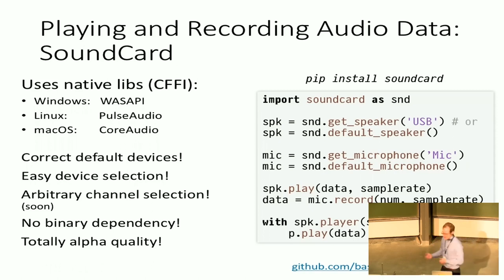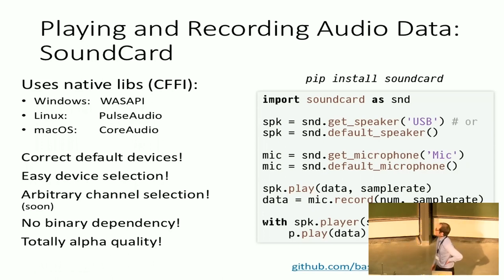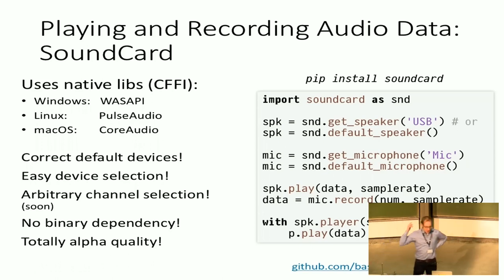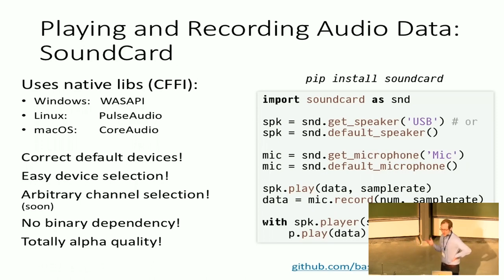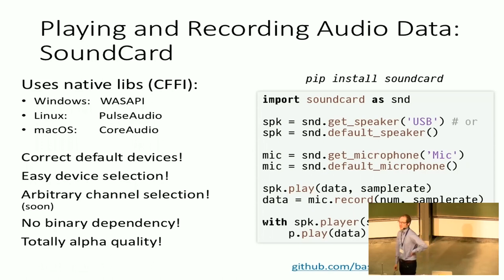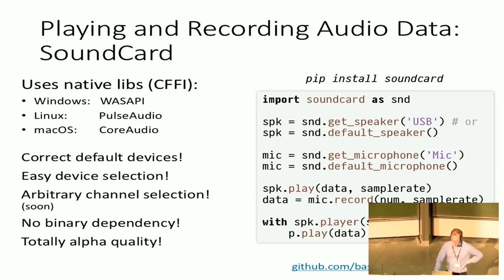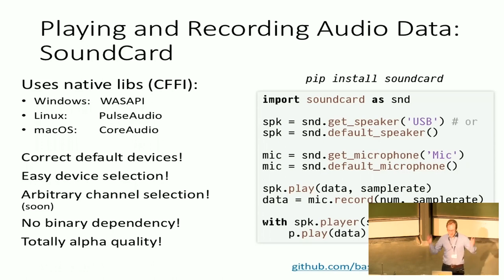With that, finally, I can get the correct default audio devices and build a nicer API. You can see on the right side: I can search for my default speaker or default microphone on the system, or I can search for a specific device using fuzzy searching, as you would expect from a modern API. And finally, I can get just the seventh and eighth channel of my big sound card. Since it uses the native OS libraries, I don't have to ship PortAudio anymore — it's just a pure Python package.